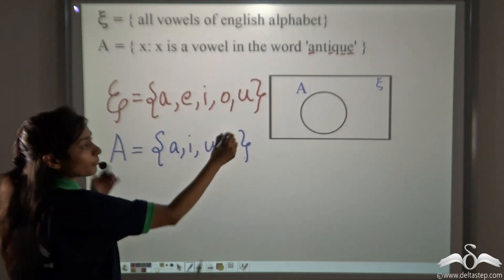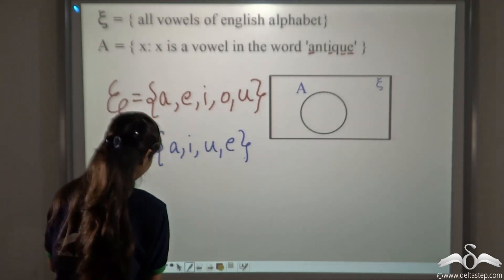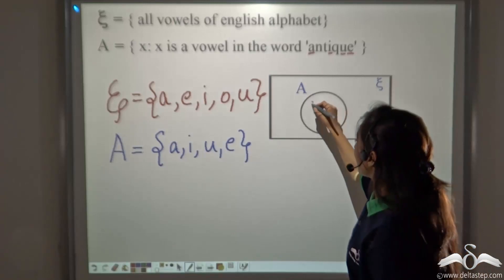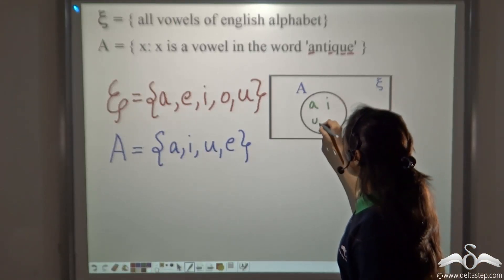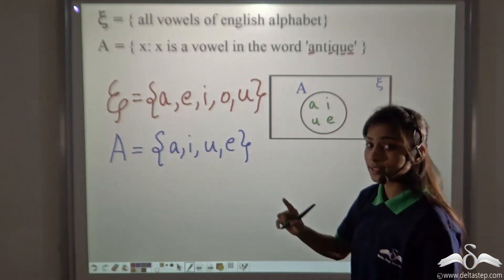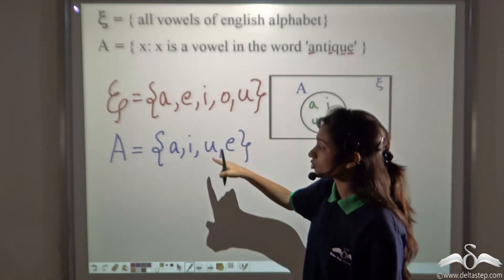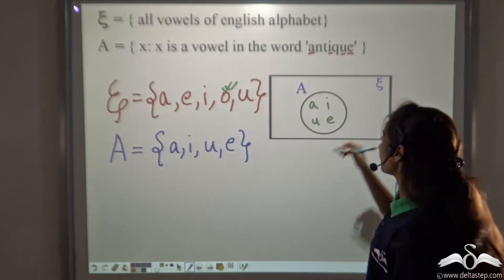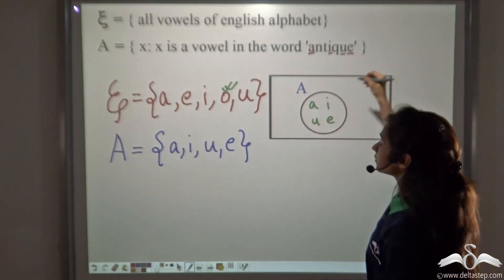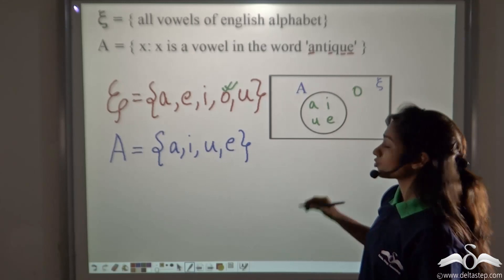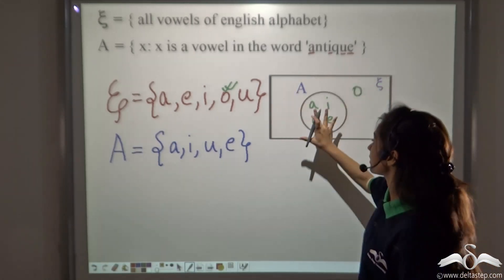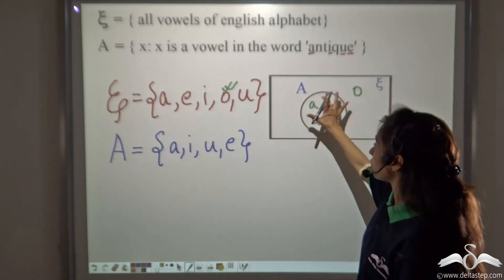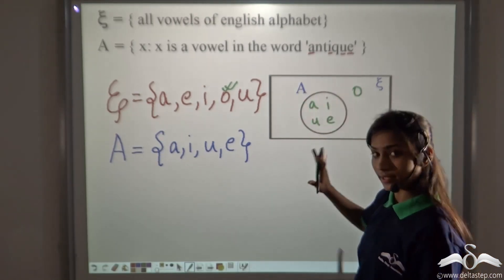We can now represent this in the Venn diagram. Set A contains A, I, U, and E. You can see there is one letter not in set A — that is O. So write O anywhere inside the universal set rectangle but outside circle A. The universal set denotes {A, I, U, E, O} whereas set A denotes only {A, I, U, E}.